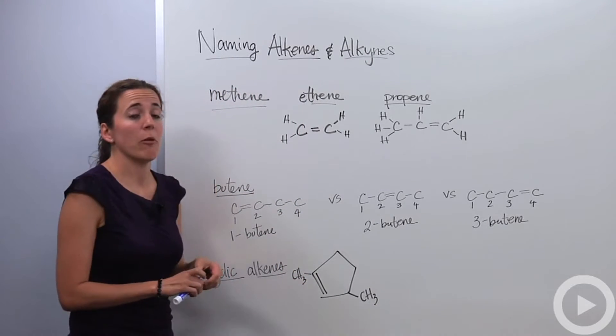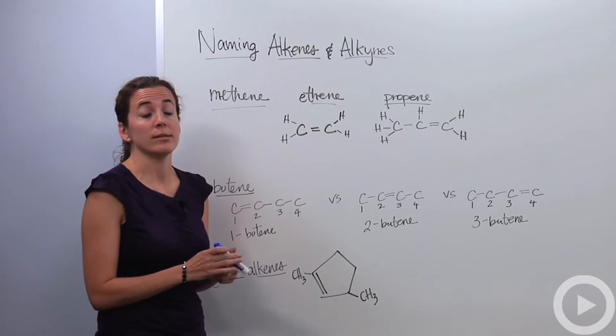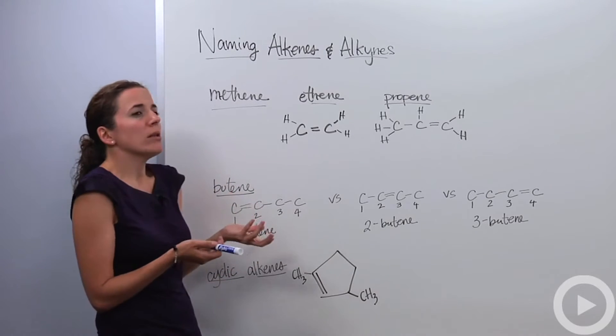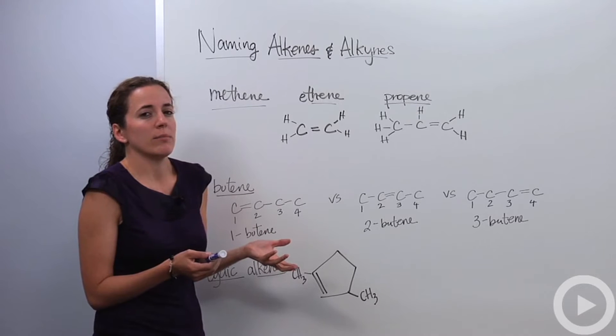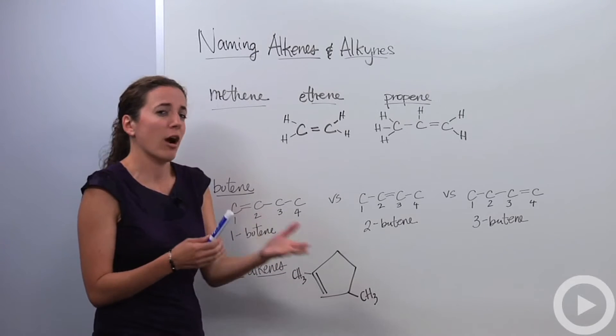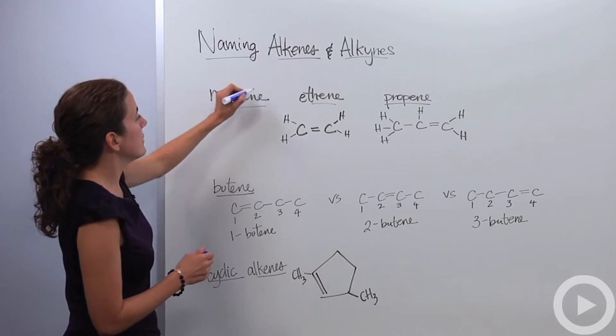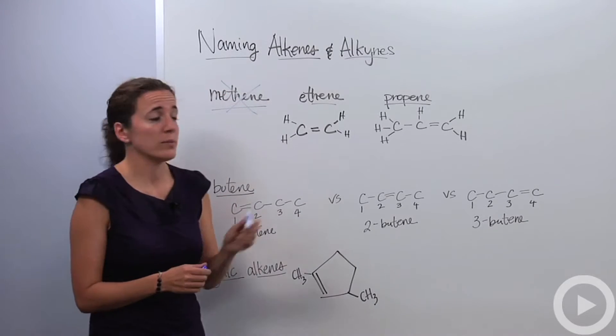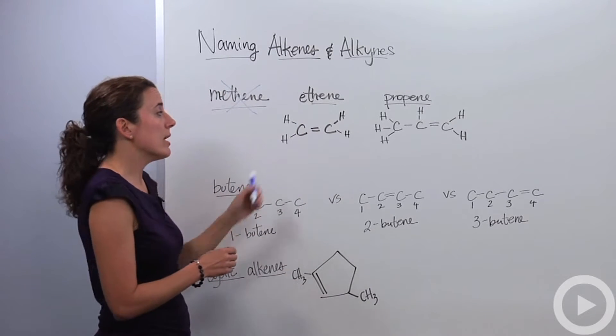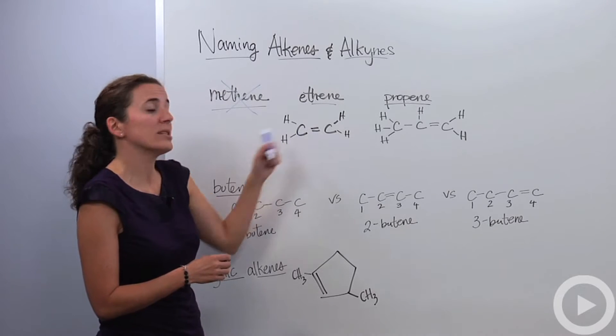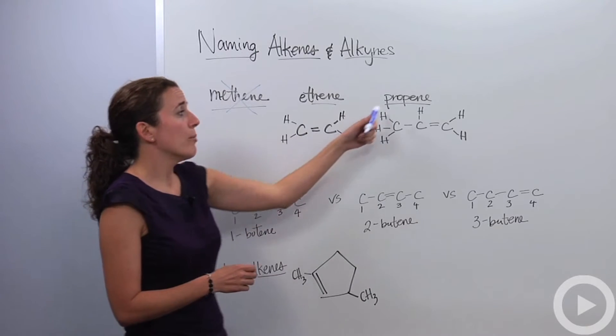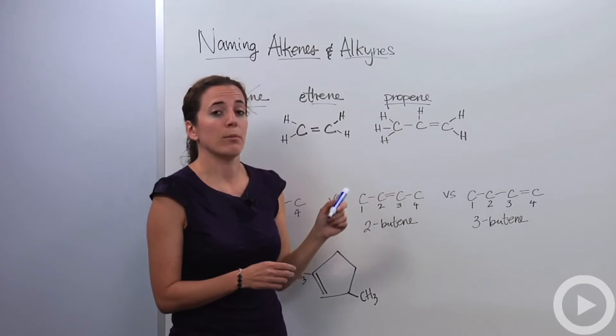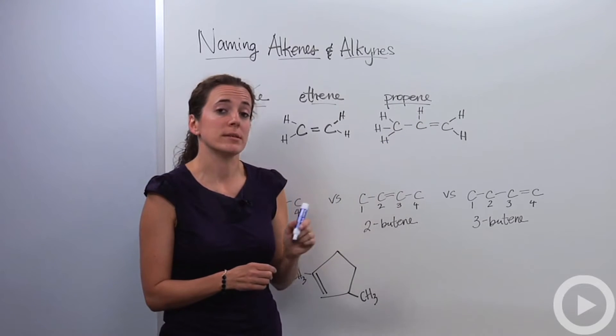I started with methane. We knew that meth talks about one carbon. It's a prefix for one carbon. Well, if you have one carbon, it can't be double bonded or triple bonded to another carbon because there's only one carbon. So there's no such thing as methene. Okay, so we're going to start with ethene. Ethene is two carbons double bonded together. Propene are three carbons double bonded within this compound.